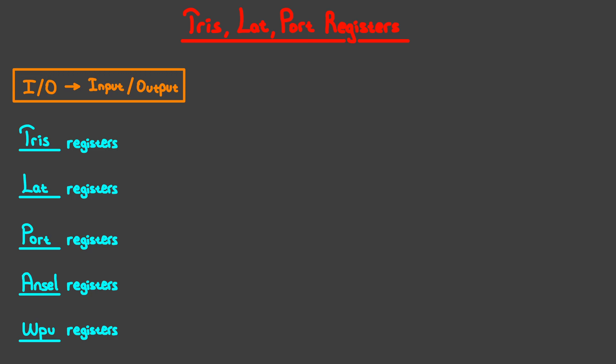Bits in the TRIS registers — so TRIS bits — will make their corresponding pins input or output. Putting 1 in a TRIS bit will make their corresponding pin input, while putting 0 there makes it output.